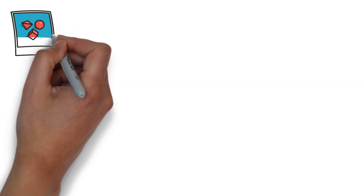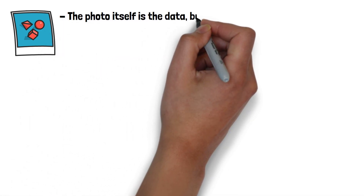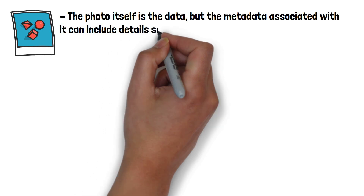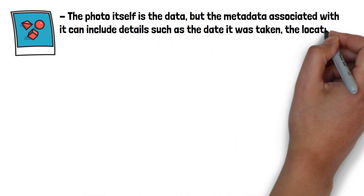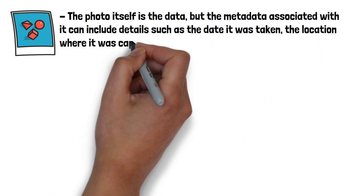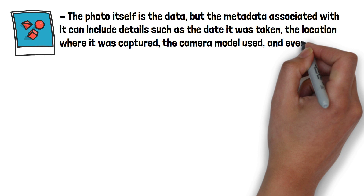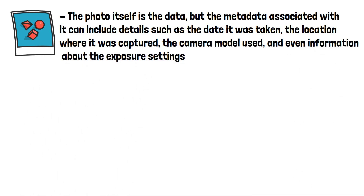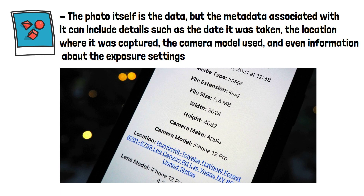As an example, let's consider a photograph. The photo itself is the data, but the metadata associated with it can include details such as the date it was taken, the location where it was captured, the camera model used and even information about the exposure settings. This metadata provides additional information about the photo, making it easier to search for, sort and understand.